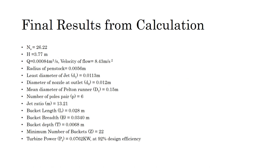In order to produce the rapid prototype, certain calculations were required. Consulting various references, we arrived at the following design data: a specific speed of 26.22, designed for a net head of 3.77 meters, a net discharge of 0.00084 m³/s, a minimum number of buckets of 22, a turbine power of 0.0762 kilowatts at 92% design efficiency, and a mean diameter of the Pelton runner of 0.15 meters.